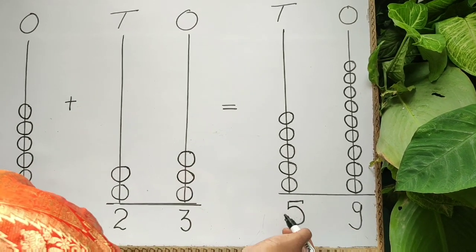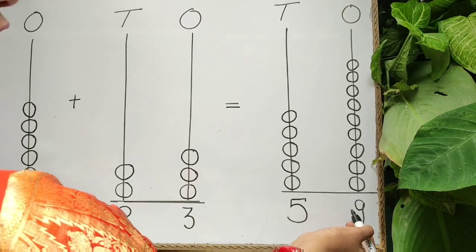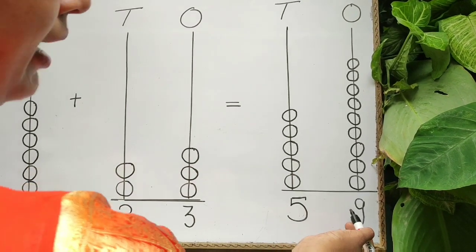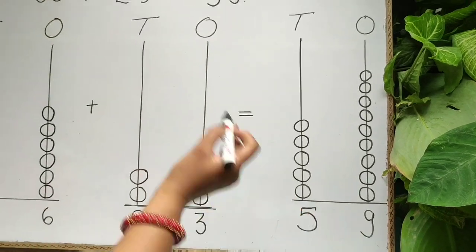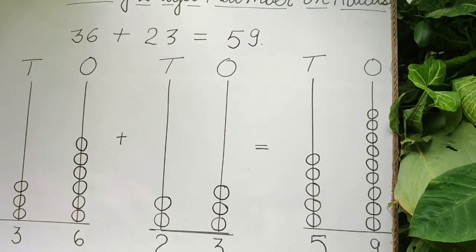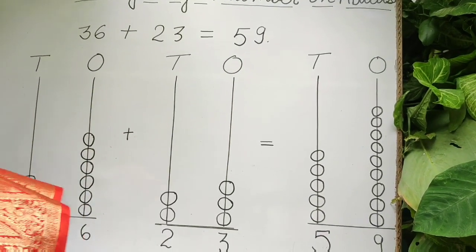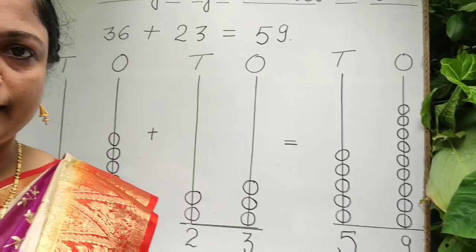Five tens, nine ones is equal to 59. The answer is 59.